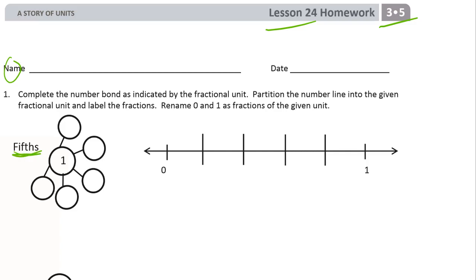Here's our fractional unit is fifths and this number line is already chopped up into five equal pieces. So we just have to label the fraction 0, like this. Done. And then let's fill in this number bond. Right? Because it says to complete the number bond with unit fractions. Five-fifths make a whole.